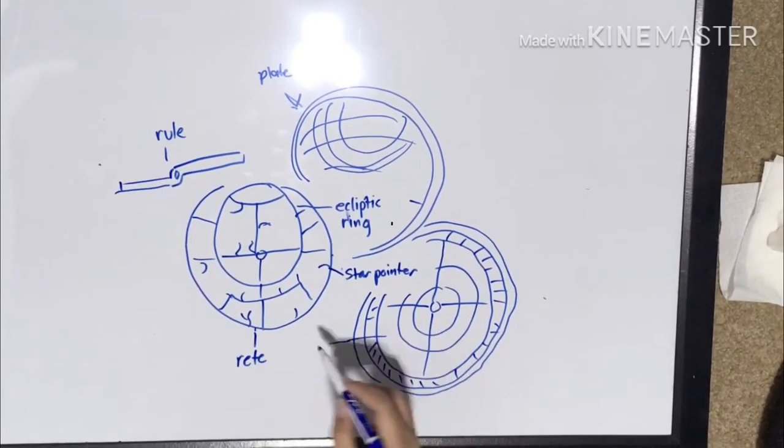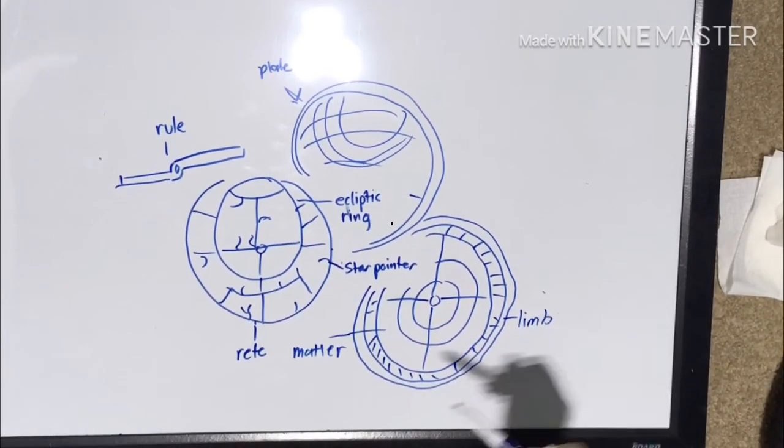It was also used to locate positions on the plate or reet, and relate them to the number of hours marked on the limb.